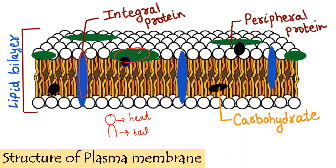Those which are attached to the head part superficially are known as peripheral proteins, and those embedded in the bilayer structure are known as integral proteins. Also, some carbohydrates are present in the plasma membrane. They can be attached to the lipids or proteins and they form chain-like structures mostly.